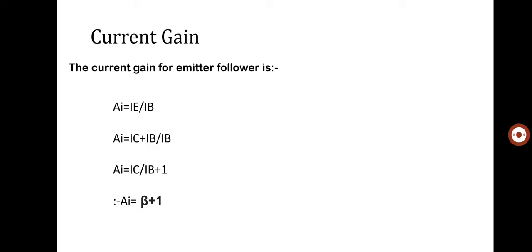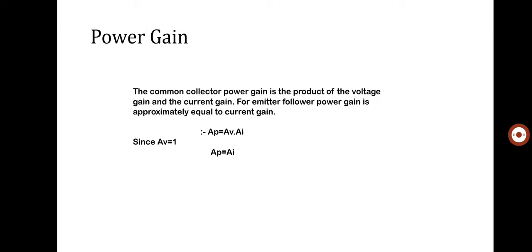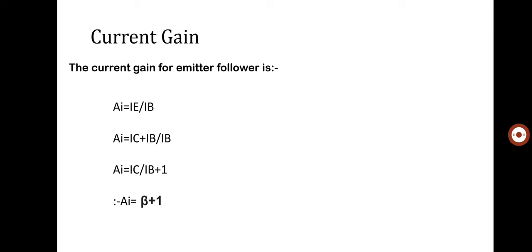What is current gain? The current gain for the emitter follower is current gain equal to emitter current divided by base current. Since IE equals IC plus IB, dividing by IB gives: current gain equals IC divided by IB plus one, which equals beta plus one. Therefore, current gain is equal to beta plus one.